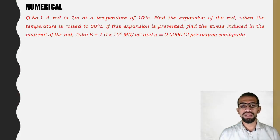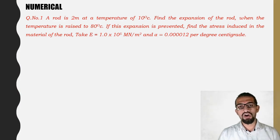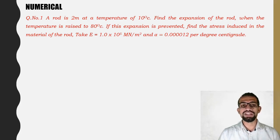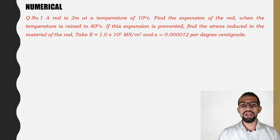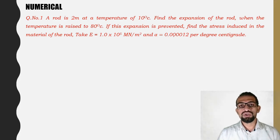Numerical number 1: A rod is 2 meters at a temperature of 10 degrees centigrade. Find the expansion of the rod when the temperature is raised to 80 degrees centigrade. If this expansion is prevented, find the stress induced in the material. Take E = 1.0 × 10⁵ MN/m² and alpha = 0.000012 per degree centigrade.